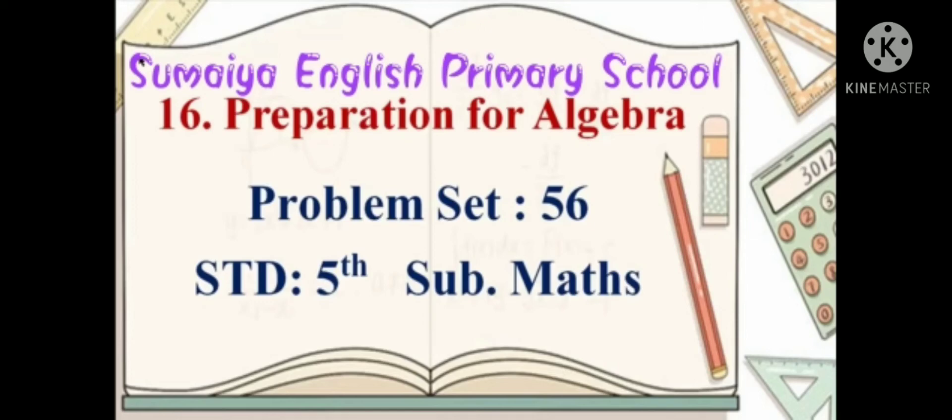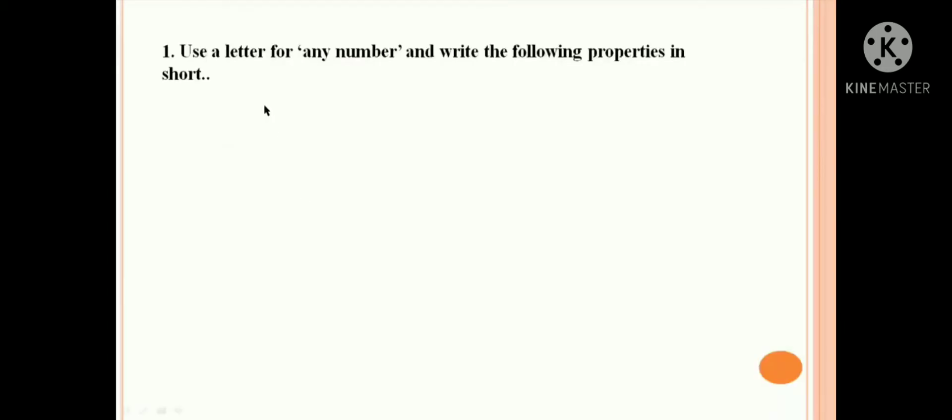Hello kids, let us begin with the 16th chapter of maths, Preparation for Algebra, Problem Set 56. The first question: use a letter for any number and write the following properties in short.